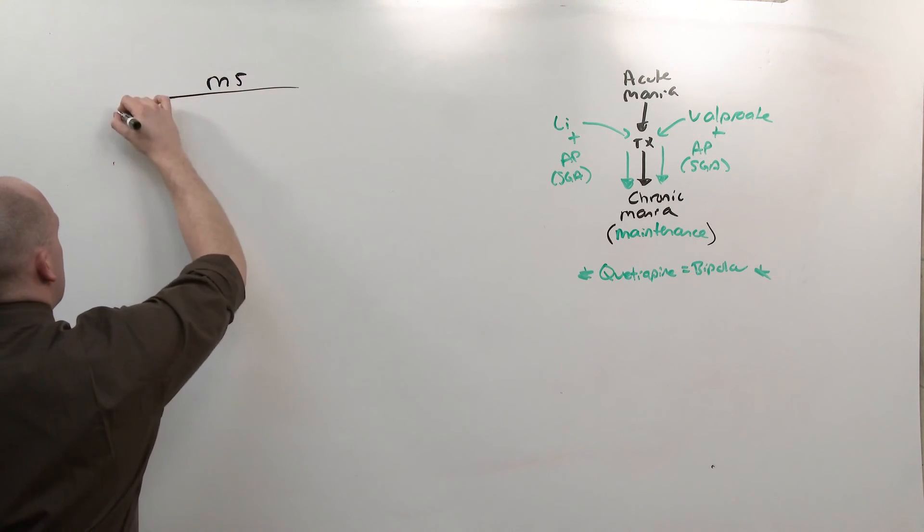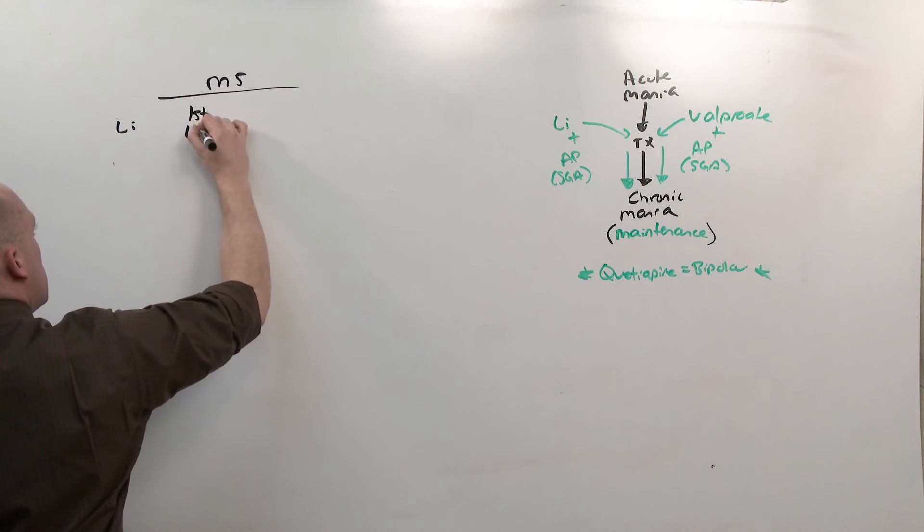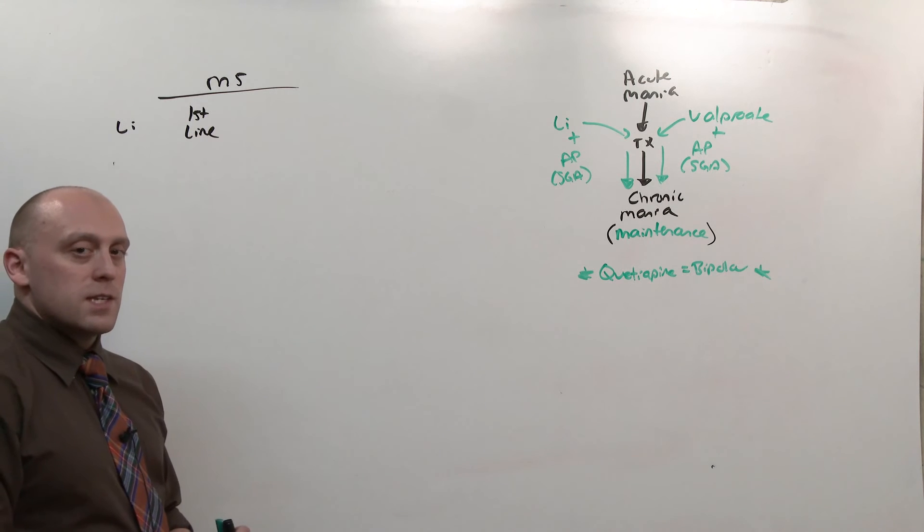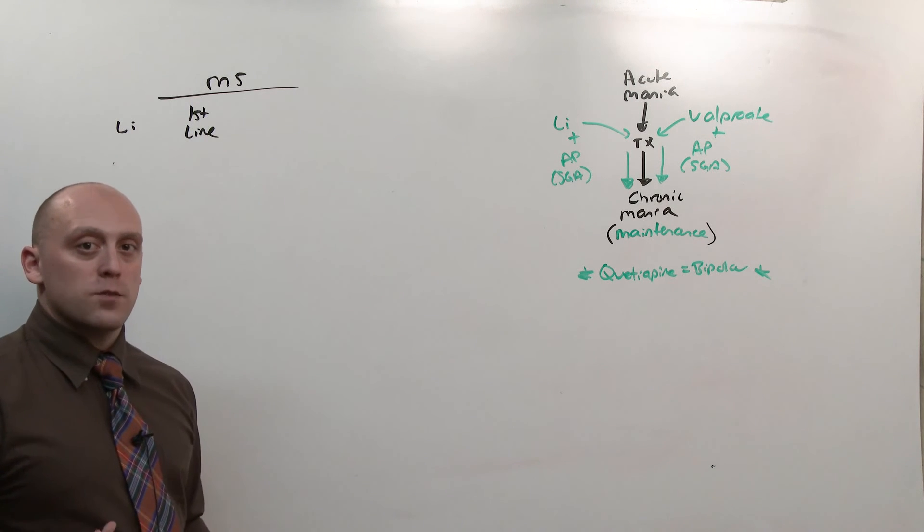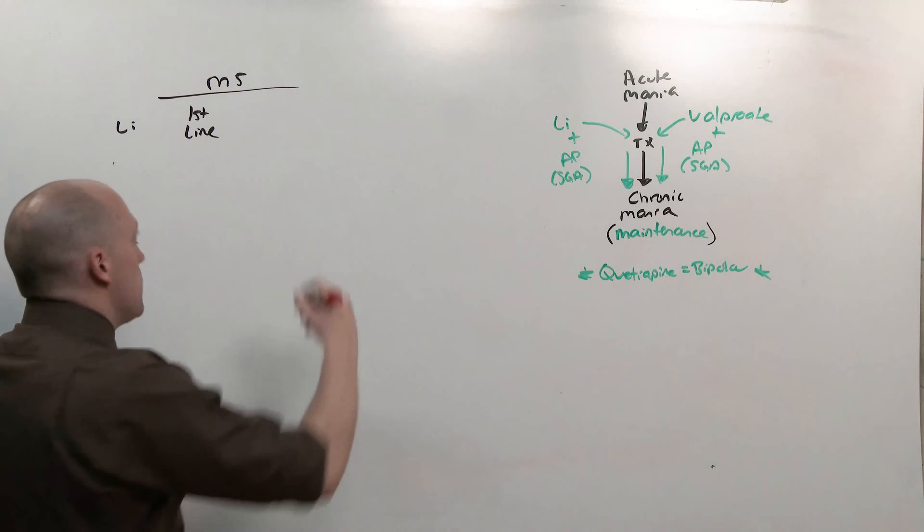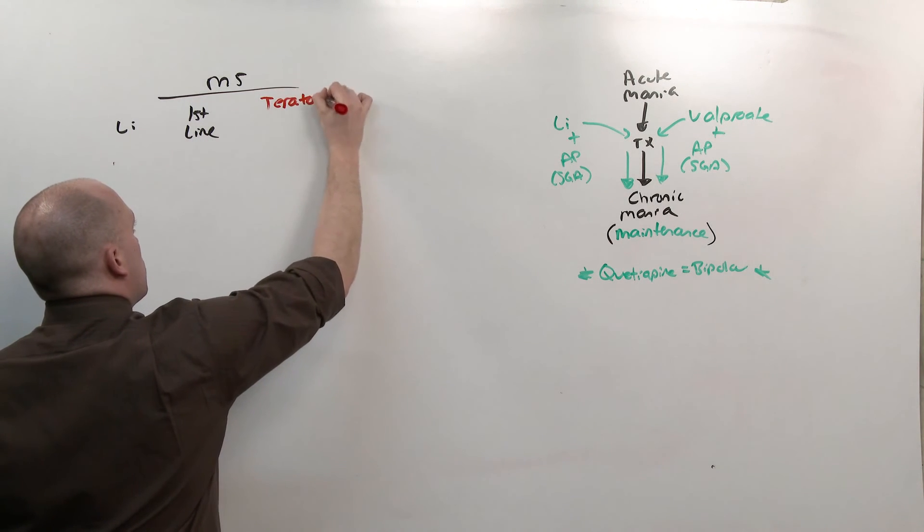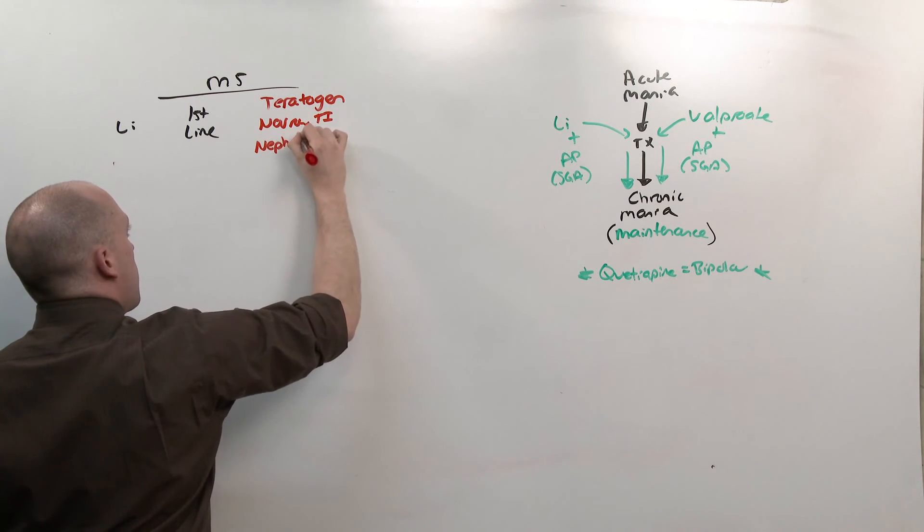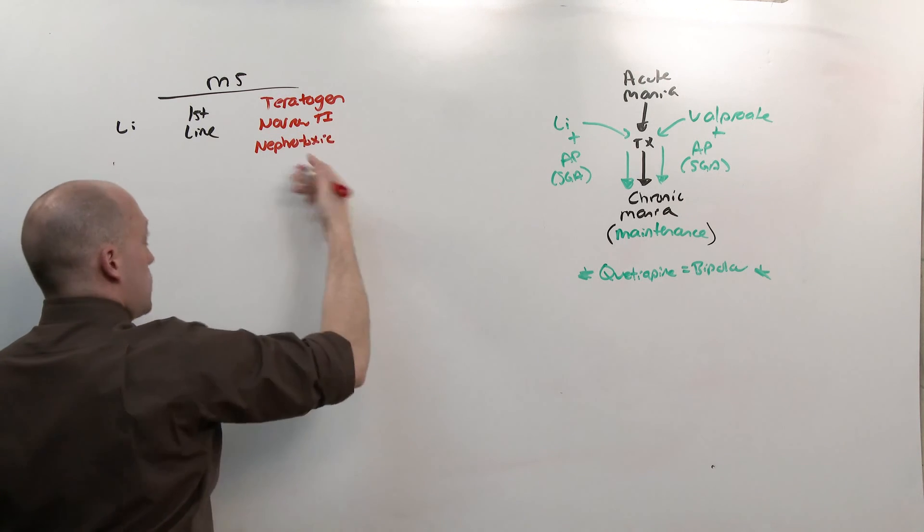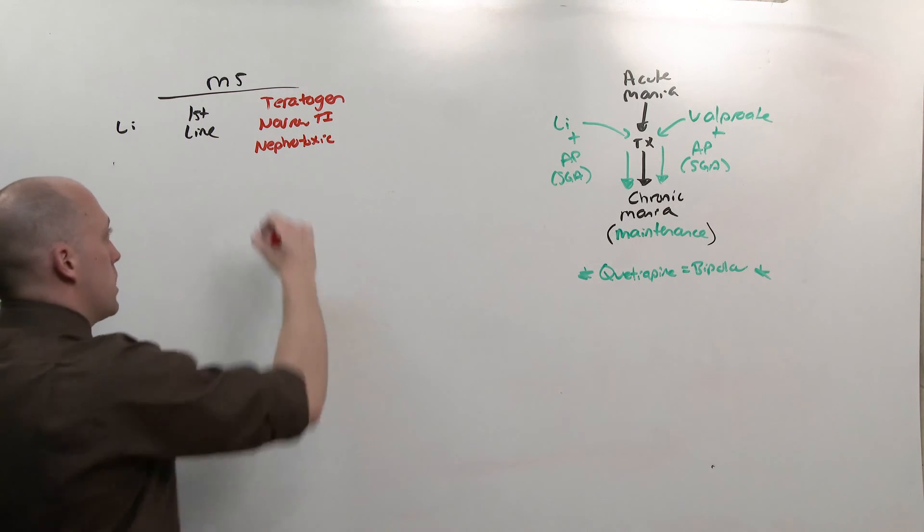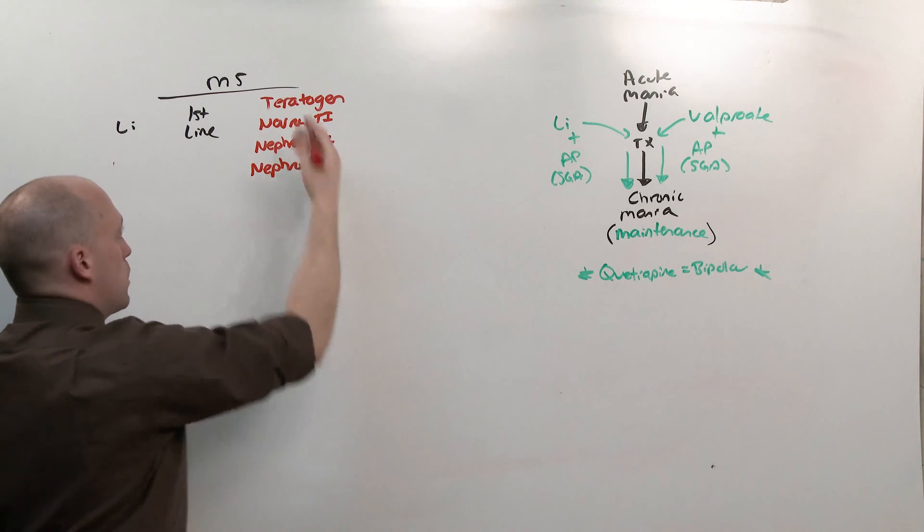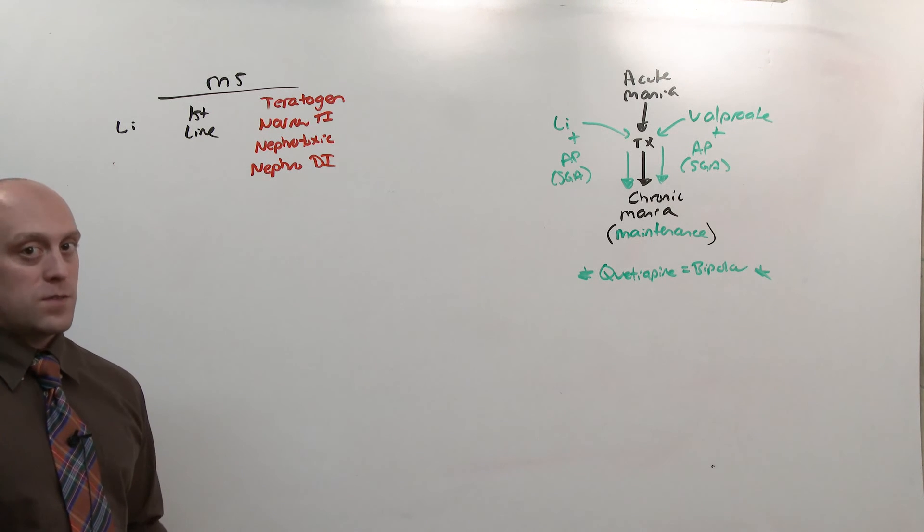Still at the top of the list is lithium. It is one of the first line agents, as we just implied. The problem with lithium is that it is a really nasty drug. Very potent, very effective, but has lots of side effects. It is a teratogen and has a very narrow therapeutic index. It's nephrotoxic, and so it can cause renal failure, but also can cause nephrogenic diabetes insipidus. These are the things you're going to be most commonly tested on. But lithium works if it's stable.